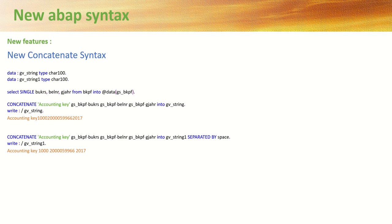If you want to separate the fields and variables with a space, we have to add a logic like this — separated by space or any other character. In the output you can see: the first is without any space, so accounting key and all key fields are joined. In the second, all the fields are separated by space. This is how we use the concatenate with the old syntax.